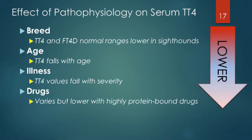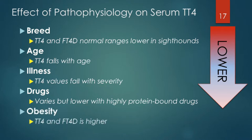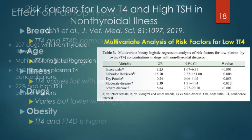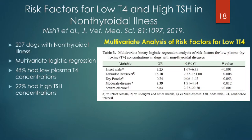All of these parameters can lead to lower T4 not associated with hypothyroidism. One factor that actually increases T4 is obesity — probably more strongly demonstrated in the cat than the dog — where total T4 and free T4 can be higher even without hyperthyroidism, possibly due to thyroid hormone resistance in severe obesity. A recent study of 207 dogs with non-thyroidal illness showed that about half had low plasma T4s, and about a quarter had high TSH.